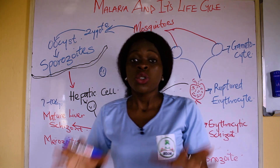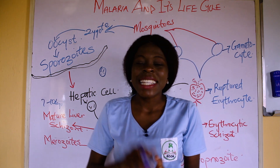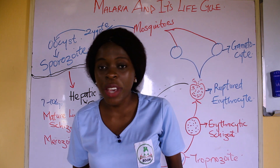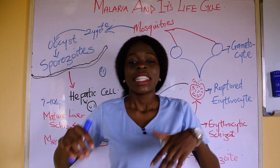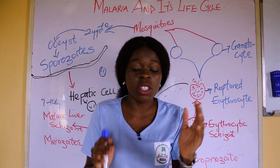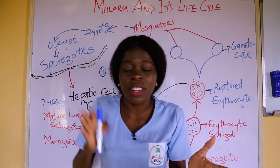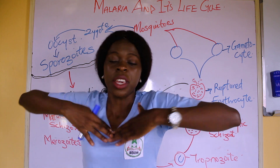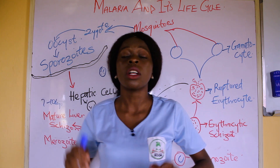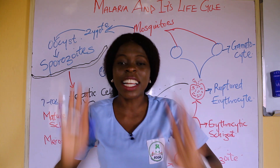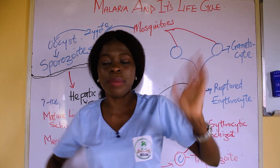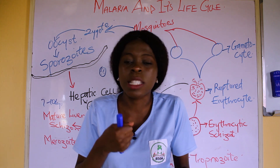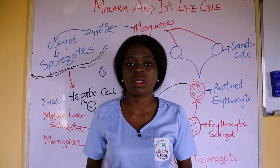In the life cycle of malaria there are two phases. The asexual phase — which does not require the male and female gametes — takes place in humans. The sexual phase — where the male and female gametocytes meet — takes place inside the mosquitoes.